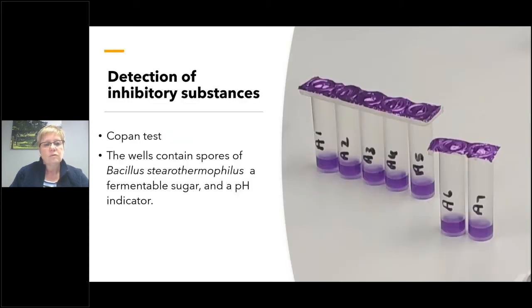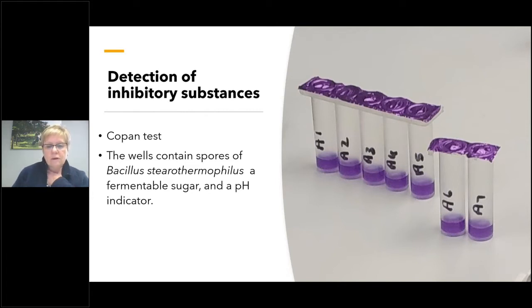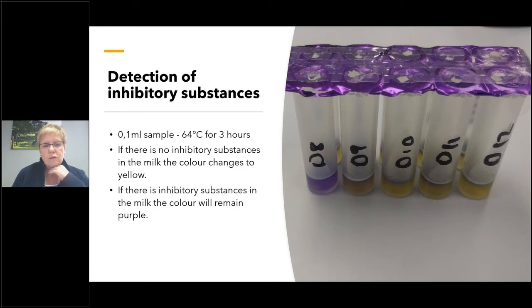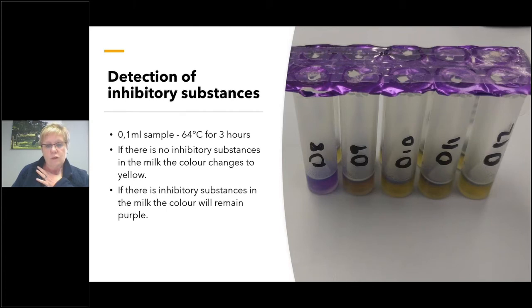The next test is detection of inhibitory substances. The test used at DSA Lab Services is the Copan test. The well contains spores of Bacillus stearothermophilus, a fermentable sugar, and a pH indicator. To do the test, you add 0.1 milliliter of your sample and incubate at 64°C for three hours. If there are no inhibitory substances in the milk, the bacteria will grow, ferment the sugar, and the pH indicator changes to yellow. A yellow coloration means the test is negative — no inhibitory substances. When there are inhibitory substances, the color stays blue.